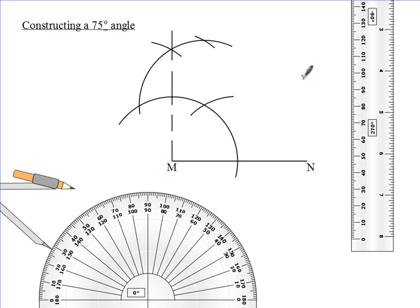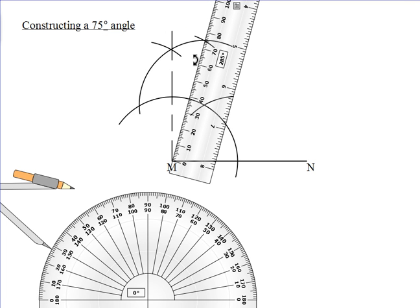Now a line from that intersection through M will create a 75 degree angle with the line MN. So let's get that done. We fix the roller there to get that line and we draw our line straight down to the M.